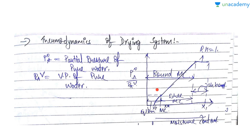We already discussed that when the solid's moisture is initially dried, unbound moisture is removed — that is, the moisture which is free in nature, or technically speaking, unbound in nature. Initially P°A equals PAB, so therefore relative humidity equals 1, and this region is known as the unbound region.